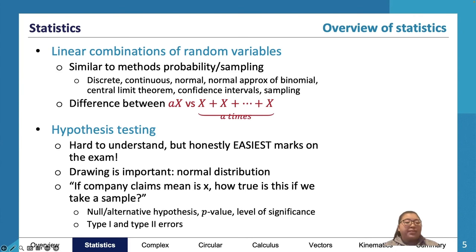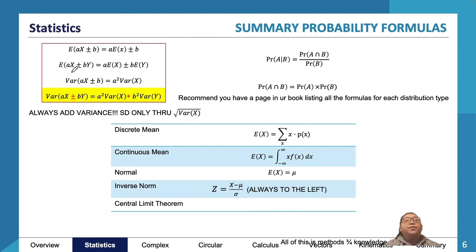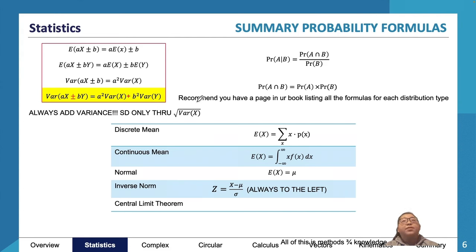Here's a summary table of all the formulas involved. For E(aX + b), that equals aE(X) + b. We also have formulas for adding different variables together and for squaring variables. The given formulas are important — make sure you have a page in your bound reference listing all these formulas and equation types. Variance is additive, and the standard deviation is found by square-rooting the variance.